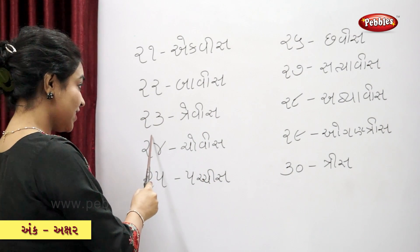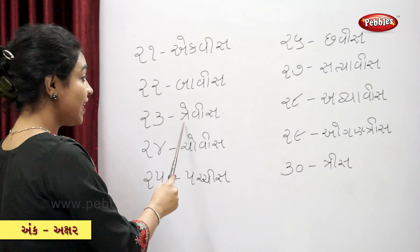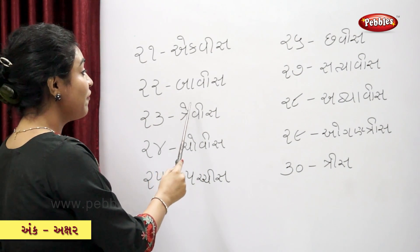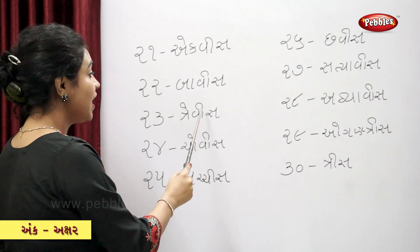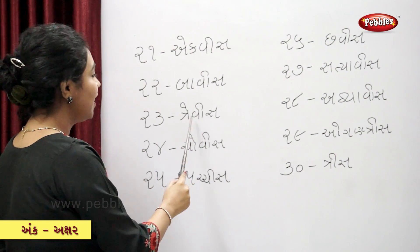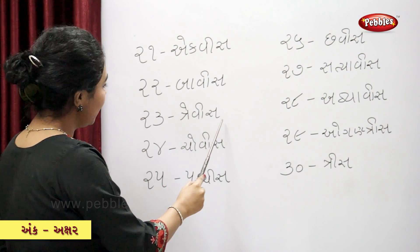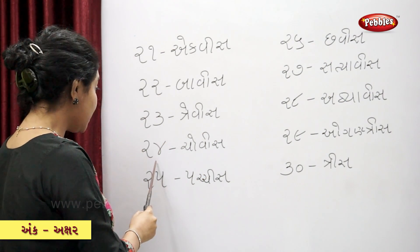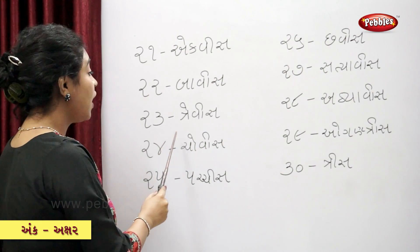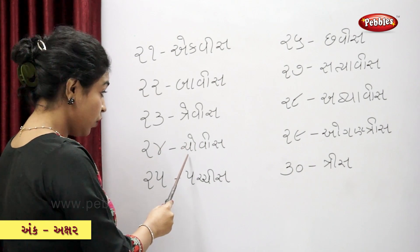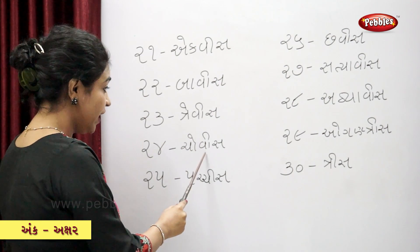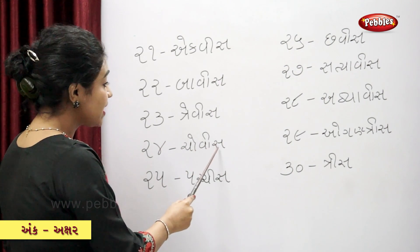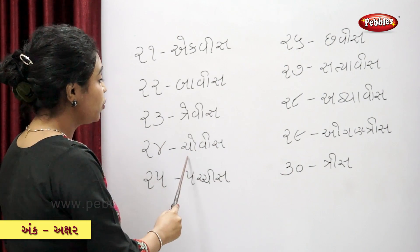Trevies — twenty-three. Chovies — twenty-four.